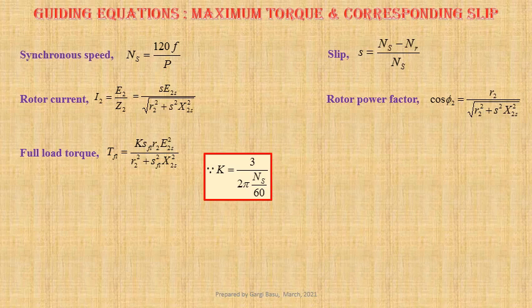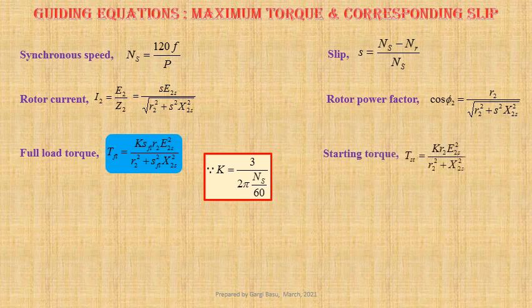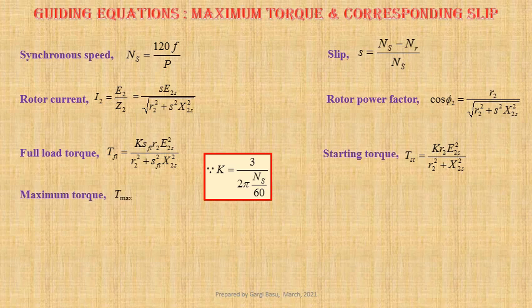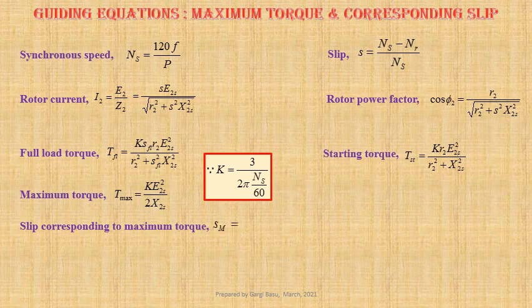By putting SFL equals to 1, we get expression for starting torque TST equals to K times E2S squared divided by R2 squared plus X2S squared. By differentiating the expression for full load torque with respect to slip, we get expression for maximum torque Tmax equals to K times E2S squared divided by 2 X2S. Slip corresponding to maximum torque SM equals to R2 divided by X2S.